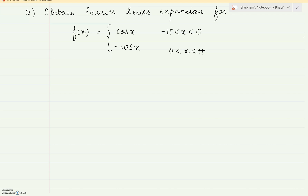We will take one more sum where the range is minus pi to pi, but for minus pi to 0 the function is cos x, and for 0 to pi the function is minus cos x. Now, you have a perception that whenever the function is cos, it will be an even function, but note that here the function is not compulsory even — it is cos for minus pi to 0, and minus cos x for 0 to pi. So it is not compulsory that the function will be even.